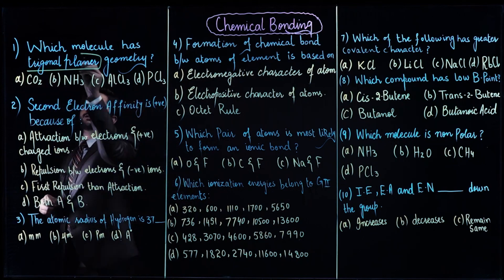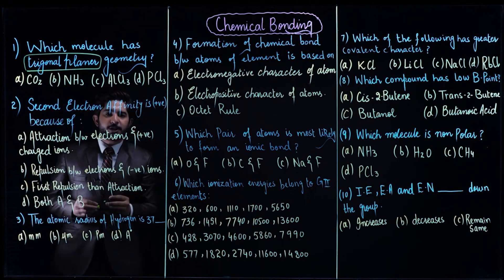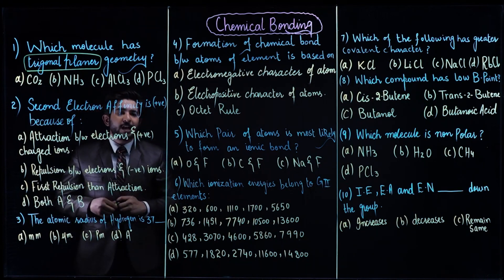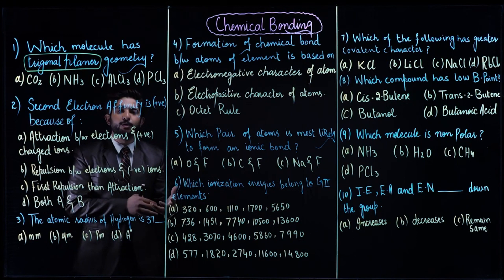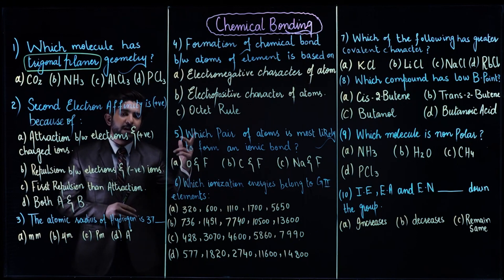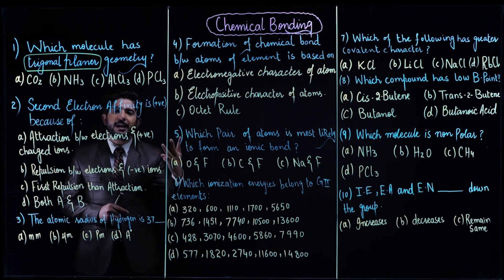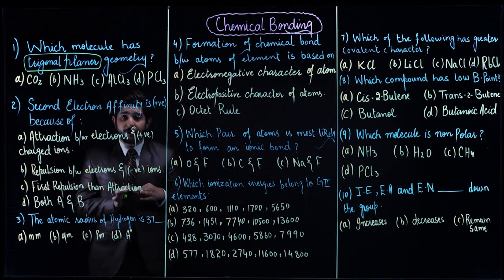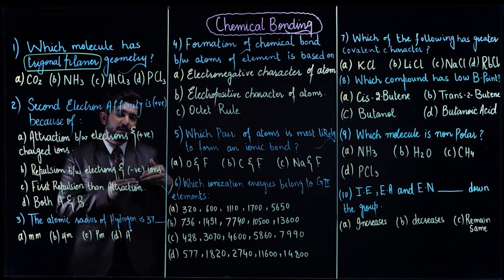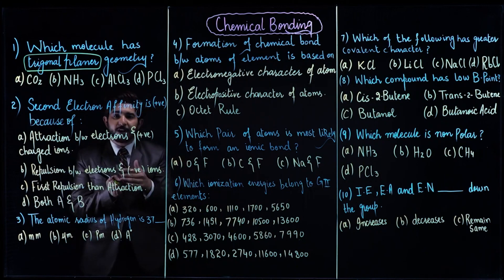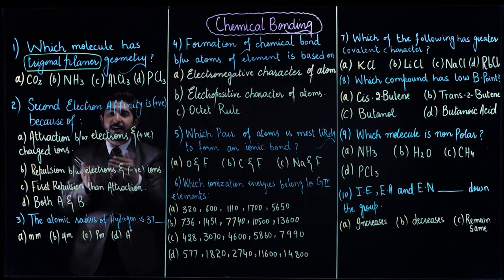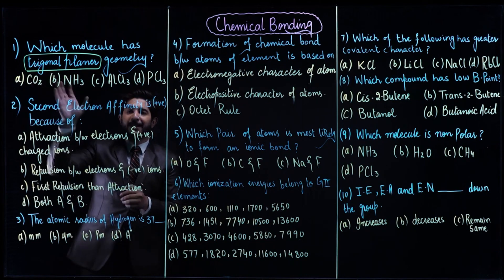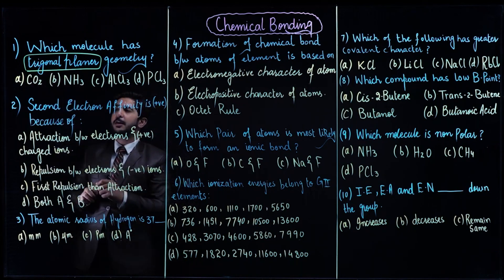This question is from the valence electron pair repulsion theory. What is trigonal planar geometry? Remember, which molecules are trigonal planar? AB3 type molecules are trigonal planar. In trigonal planar we have three bond pairs and zero lone pairs, and the bond angle is 120 degrees. So in trigonal planar shape the angle is 120 degrees.